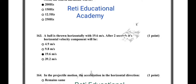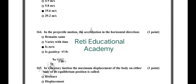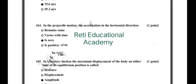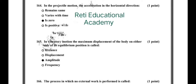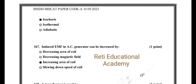Question number 163: a ball is thrown horizontally with 19.6 meters per second; after two seconds its horizontal velocity component will be 19.6 meters per second. Question number 164: in projectile motion, the acceleration in the horizontal direction is zero; C is the correct option. Question number 165: in vibratory motion, the maximum displacement of the body on either side of its equilibrium position is called amplitude.